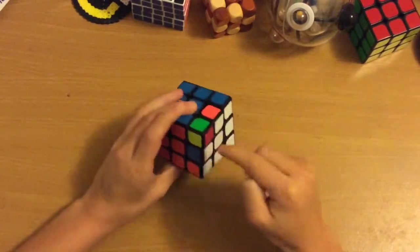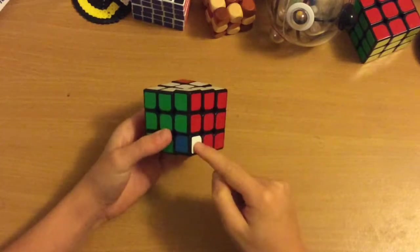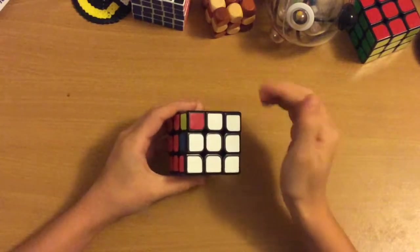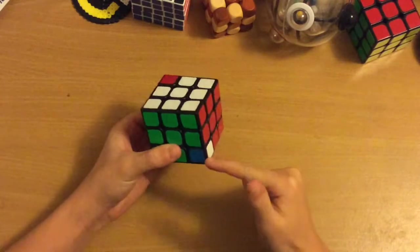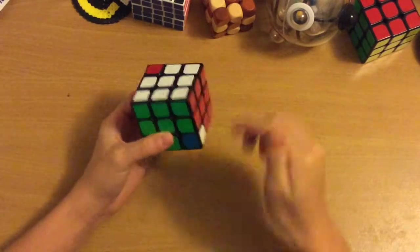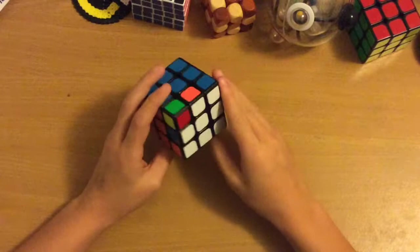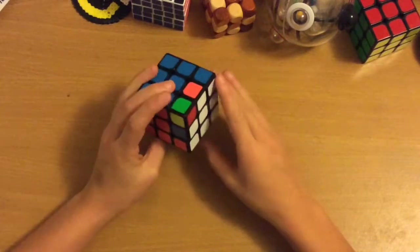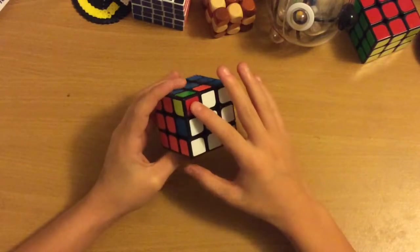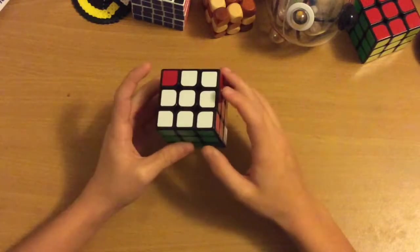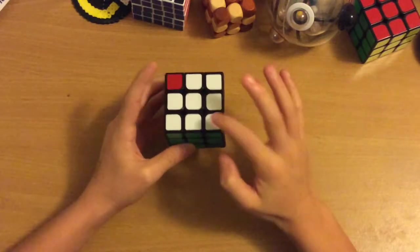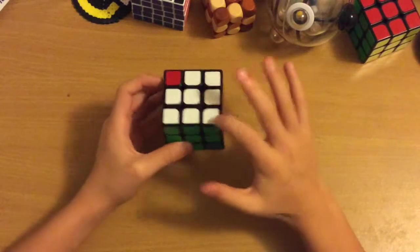What that does is it switches this piece with this piece. So in the blind solving letter scheme, it'd be A with P. So it switches these two blind solving. So the Y perm, basically what it does is it switches these two pieces. So that's A with C.